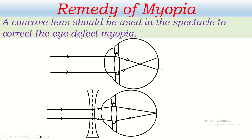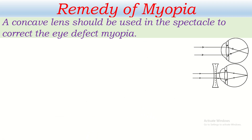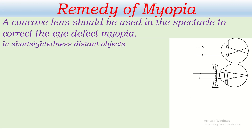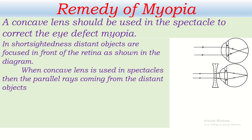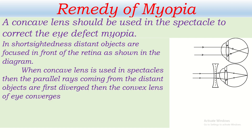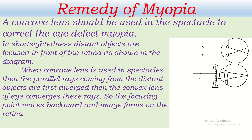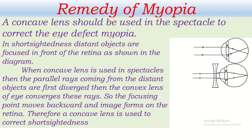To summarize: in short-sightedness or myopia, distant objects are focused in front of the retina. When a concave lens is used in spectacles, the parallel rays coming from distant objects are first diverged. Then the convex lens of the eye converges these rays, so the focusing point moves backward and the image forms on the retina. Therefore, a concave lens is used to correct short-sightedness.